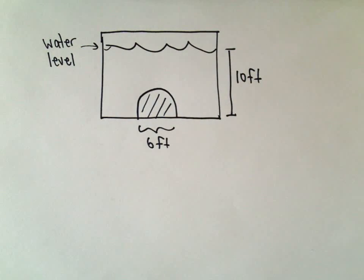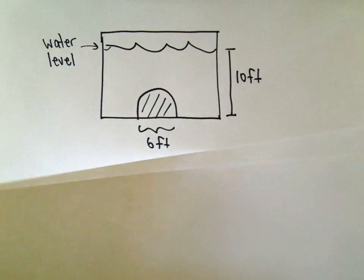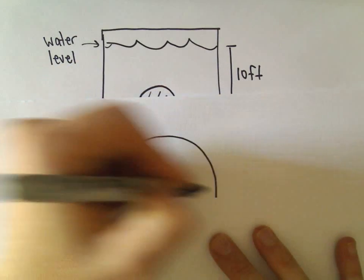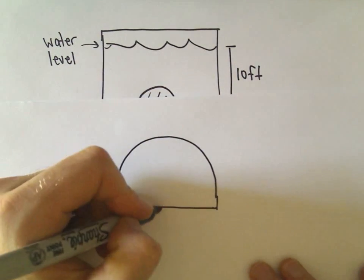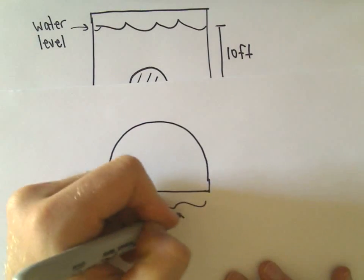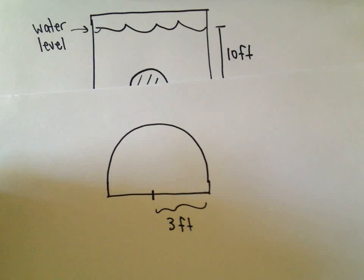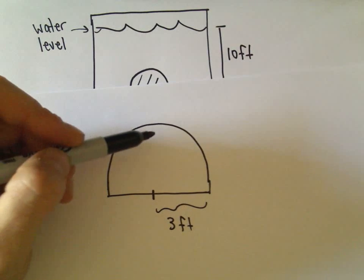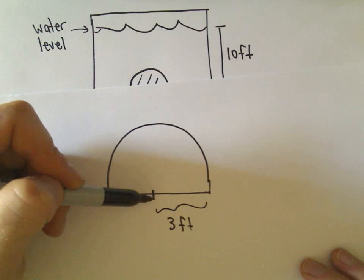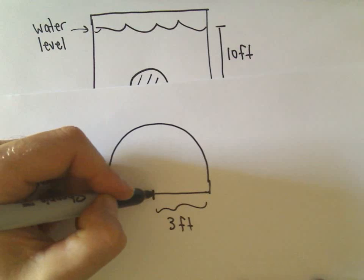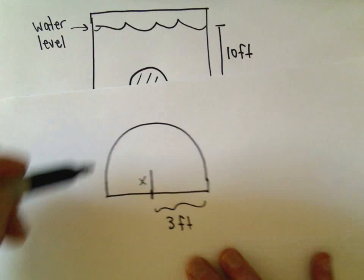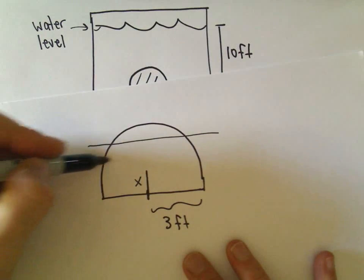The idea is kind of the same as in the previous example. I'm going to make a picture of our gate. Since the diameter was 6 feet, this is going to have a radius of just 3 feet. In this case, I'm going to let x be some distance measured from the bottom of the gate. The basic idea is we're going to chop this up into n pieces.